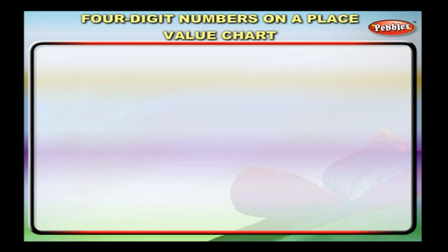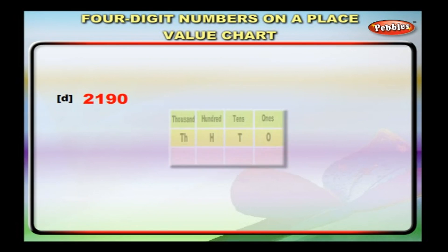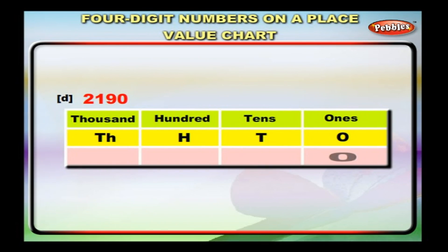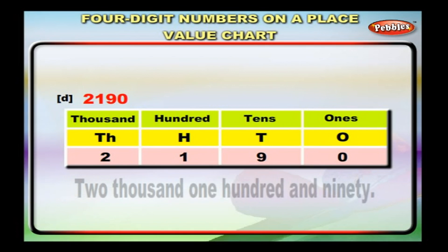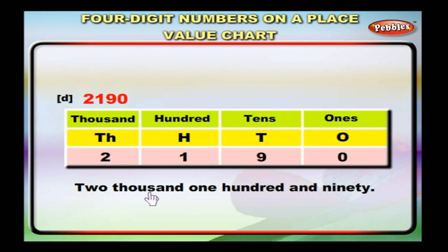Next is two thousand, one hundred and ninety. Bring zero to the ones column, nine to the tens column, one to the hundreds column, and two to the thousands column. We have two thousands, one hundred, nine tens and zero ones. We write this as two thousand, one hundred and ninety.